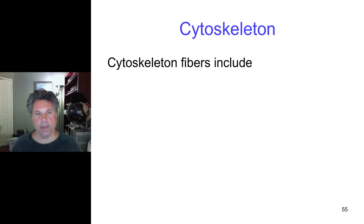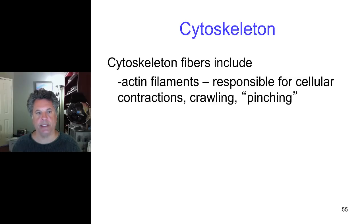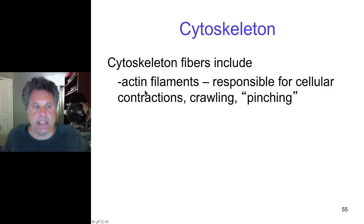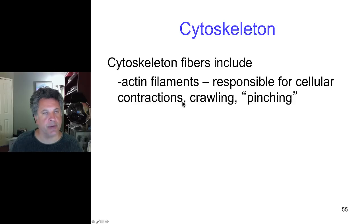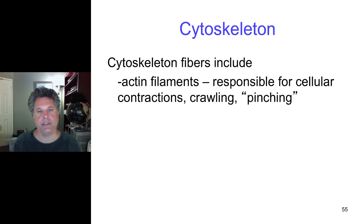What are the elements of the cytoskeleton? The first class of cytoskeletal elements are actin filaments, which we call microfilaments. Actin filaments are known as microfilaments and they are responsible for cellular contractions. For example, they can be involved in contracting the plasma membrane during cell divisions so as to pinch off two daughter cells.